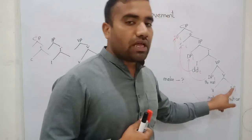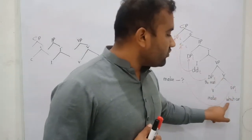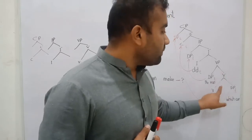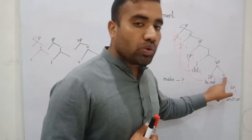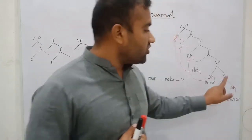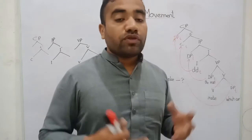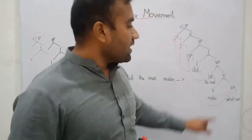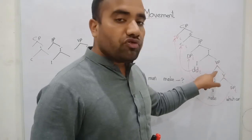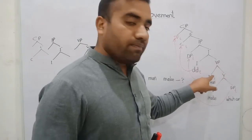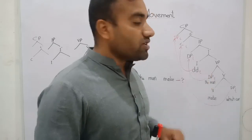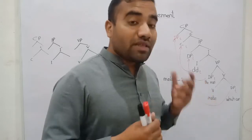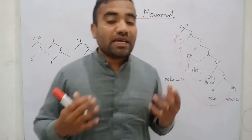The verb 'make' takes a DP as a complement, and this is the V-bar position — the bar node of V. At this position we have the item 'which car.' Then V introduces its specifier position, and at this position we have the agent role, 'the man' — the one who is making the car.